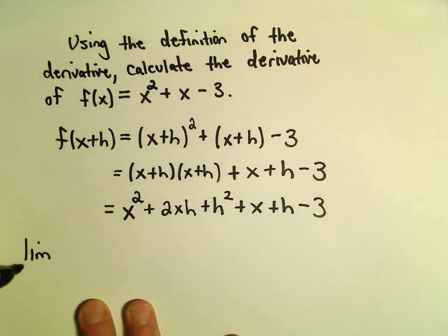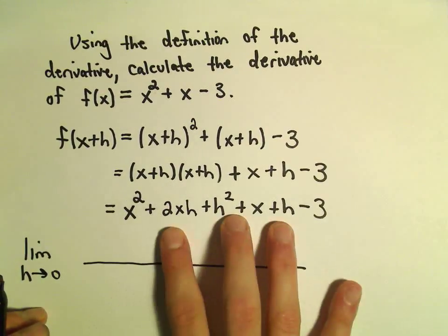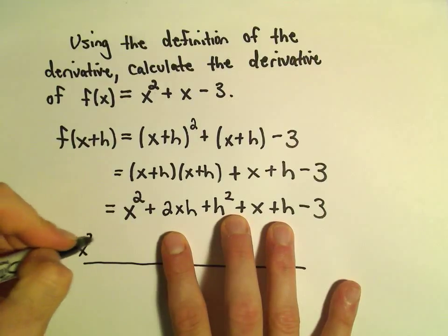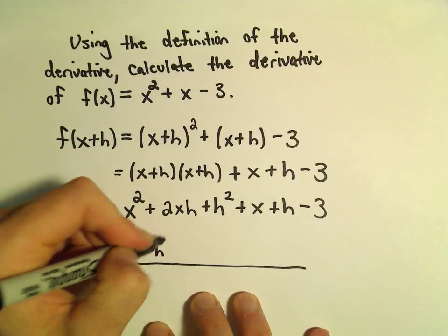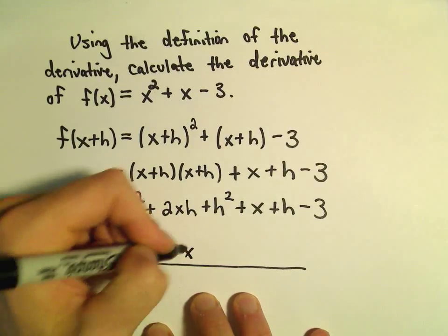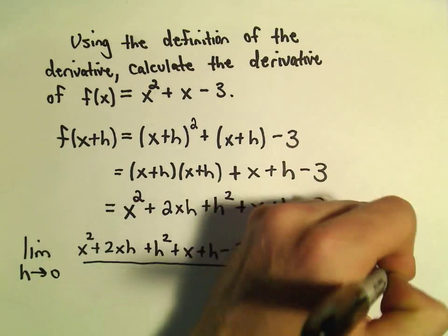So okay, I'm going to fill in this definition. The limit is h approaches 0. It says we take f of x plus h, which is going to be all this stuff.